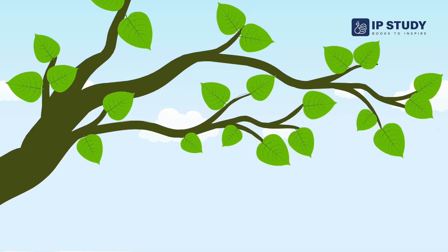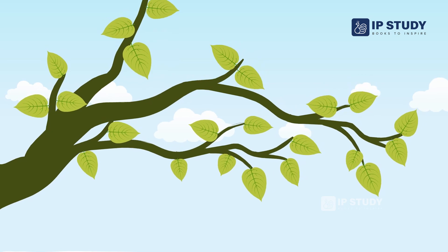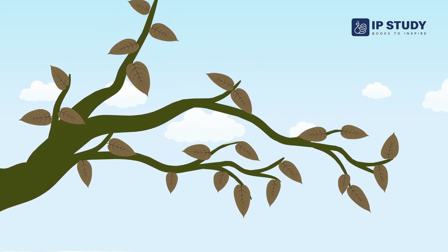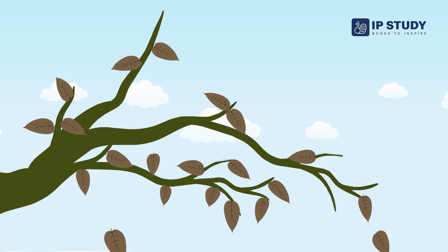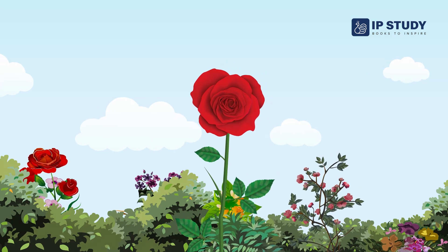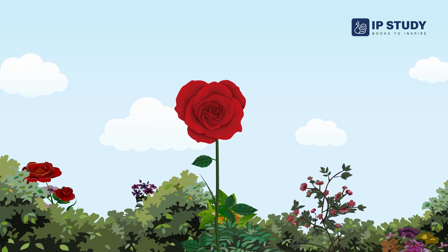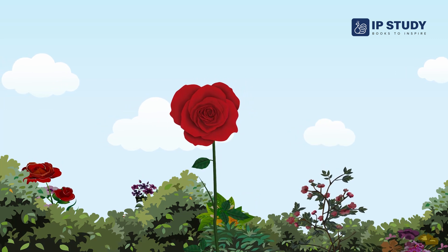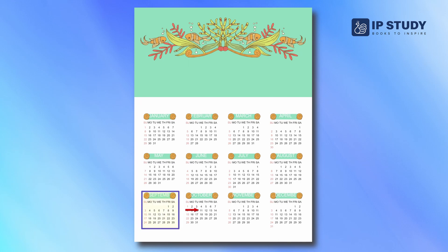Autumn is otherwise called fall due to the fact that the leaves from the trees begin falling in autumn. Because of the absence of rain, leaves begin evaporating and afterwards fall, and new leaves come up in winter. In India, this season falls from the period of September to November.